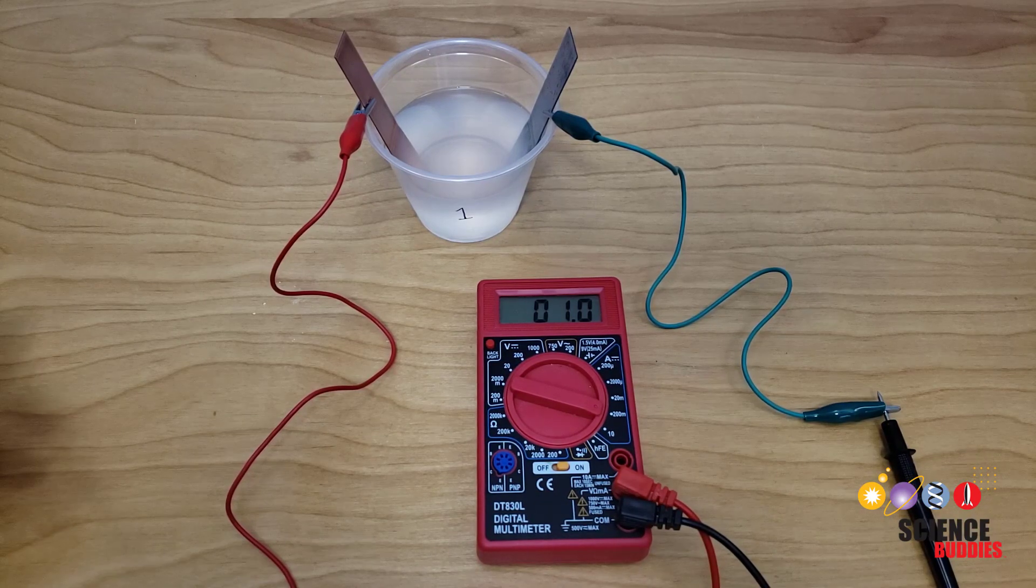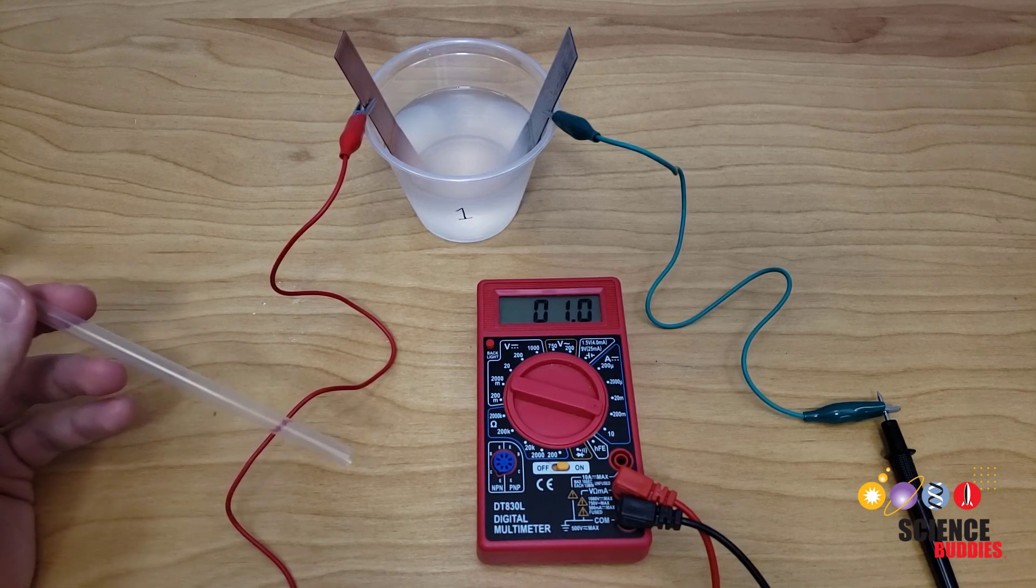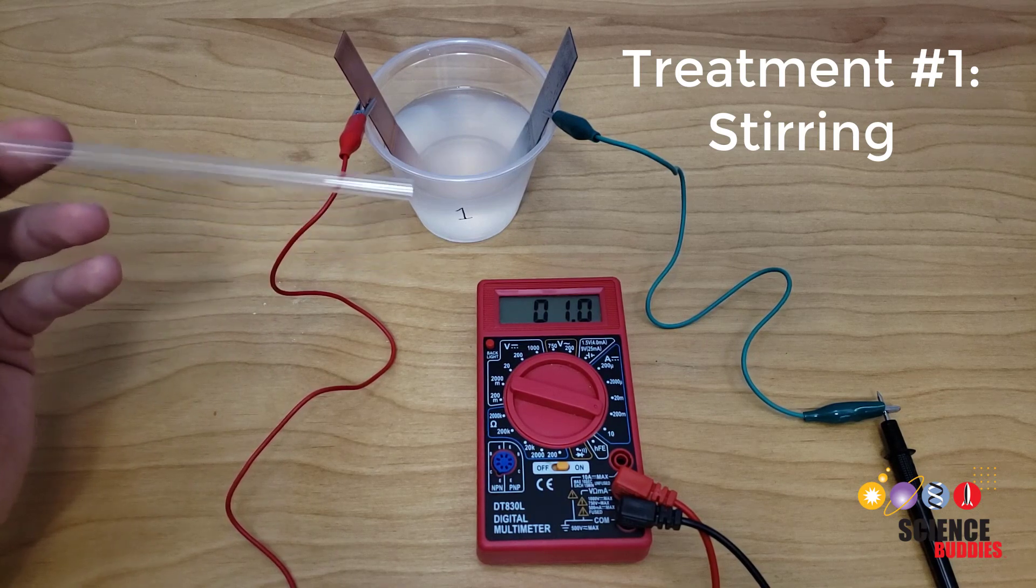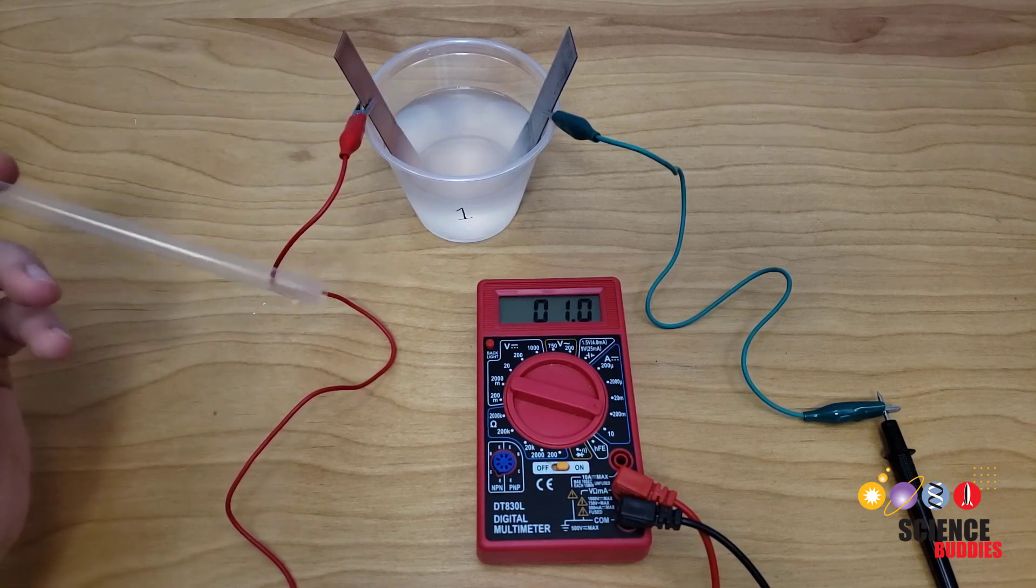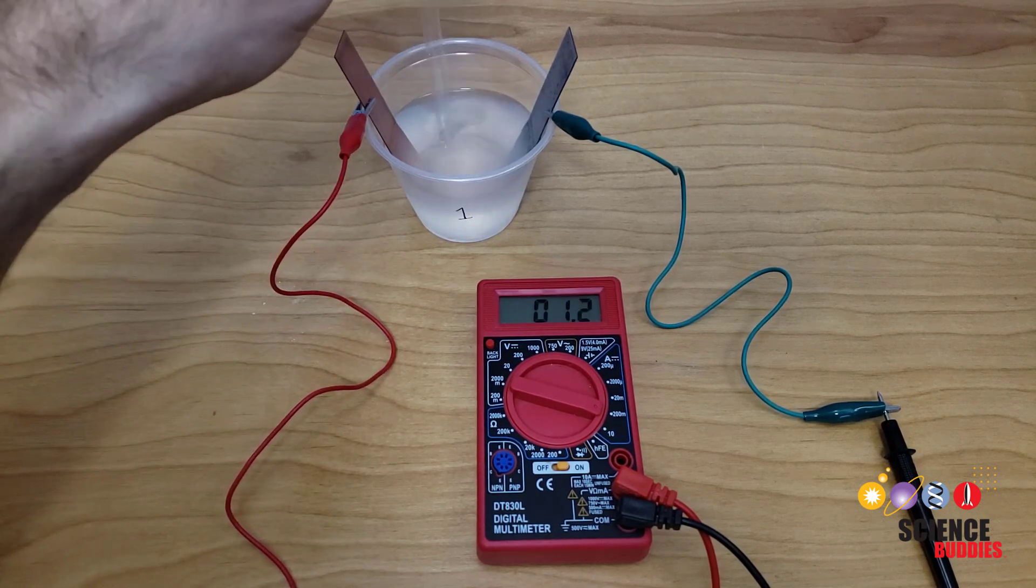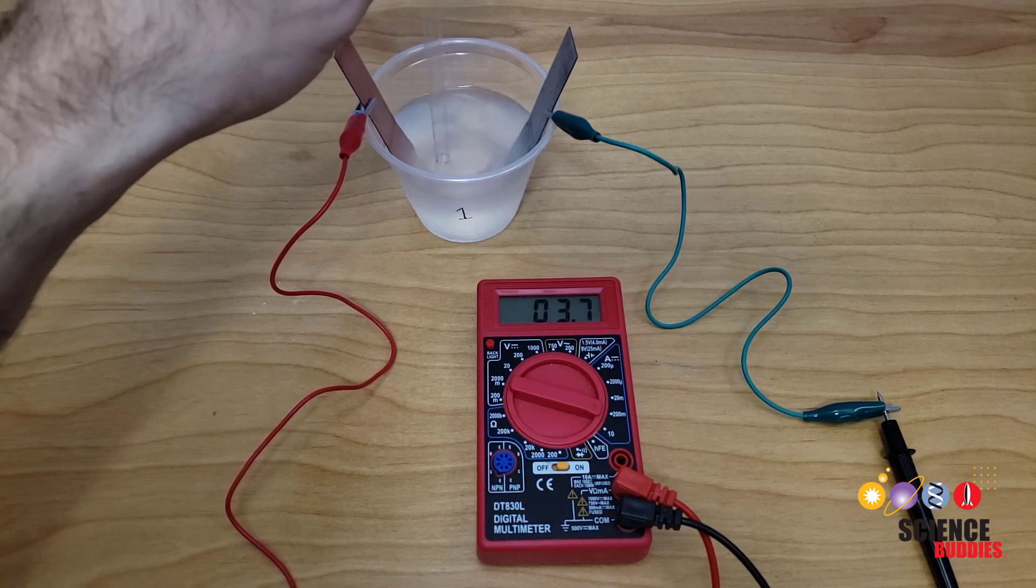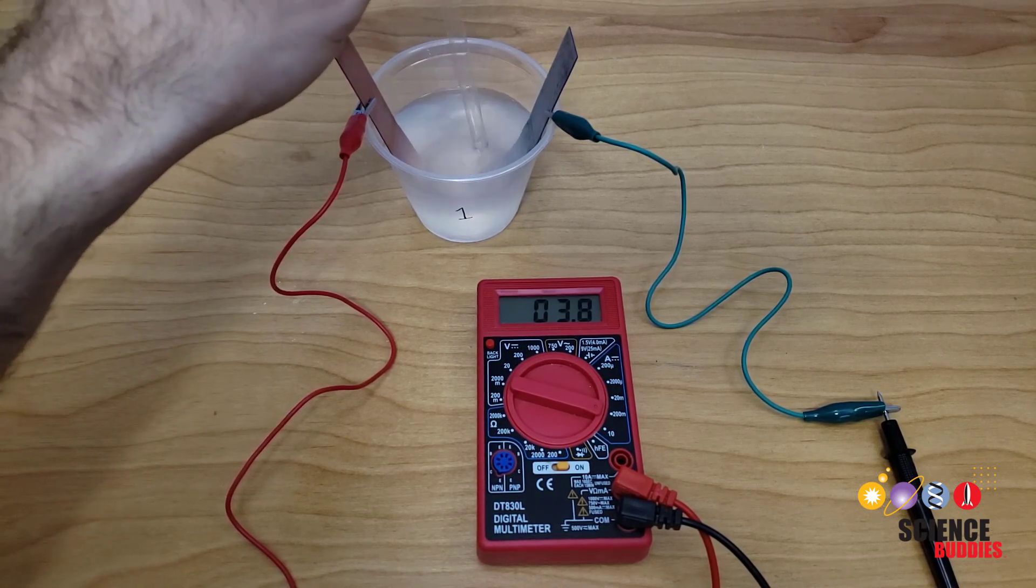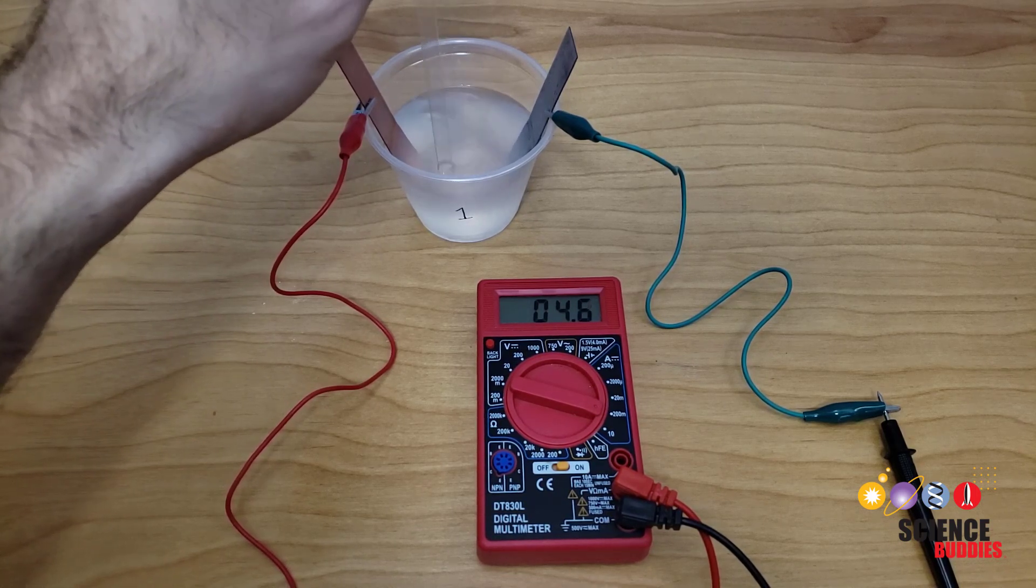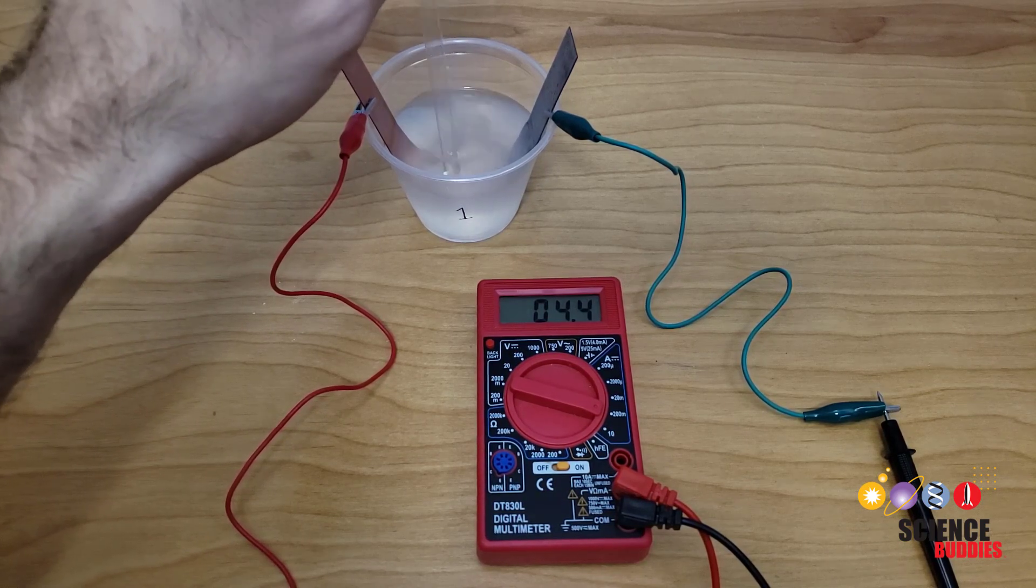The first is a mechanical treatment where you simply stir the solution with a straw. Be careful not to knock the electrodes over and make sure you don't bump the electrodes into each other while you're doing this. Try stirring the solution with a straw and watch the current reading on the multimeter. You should see it go back up. Continue stirring for about three minutes and record the highest current reading that you see. It might fluctuate a little bit, and that's okay.